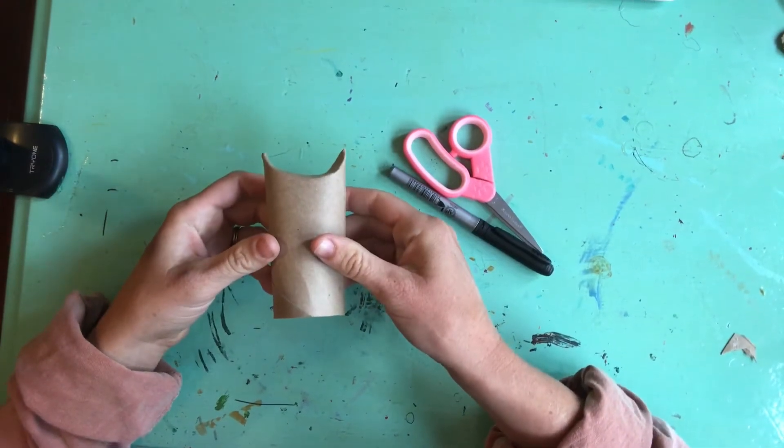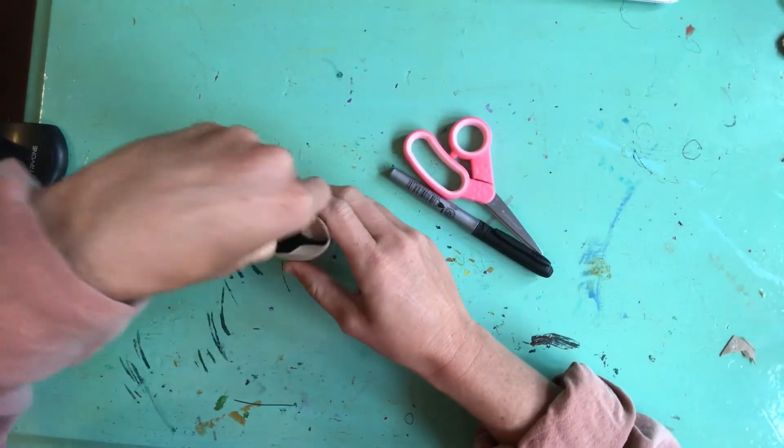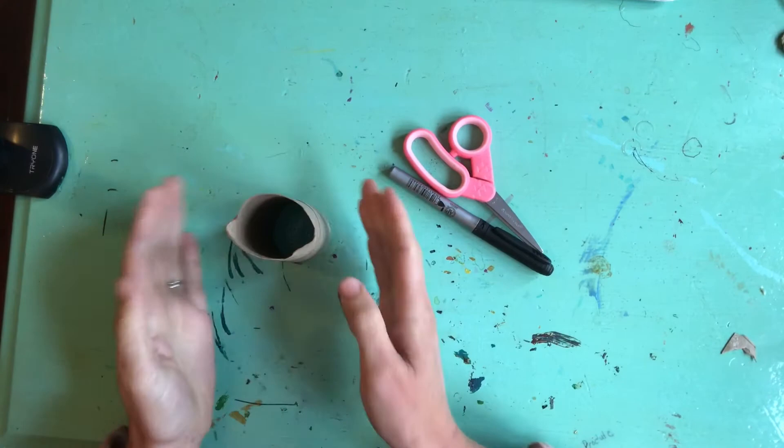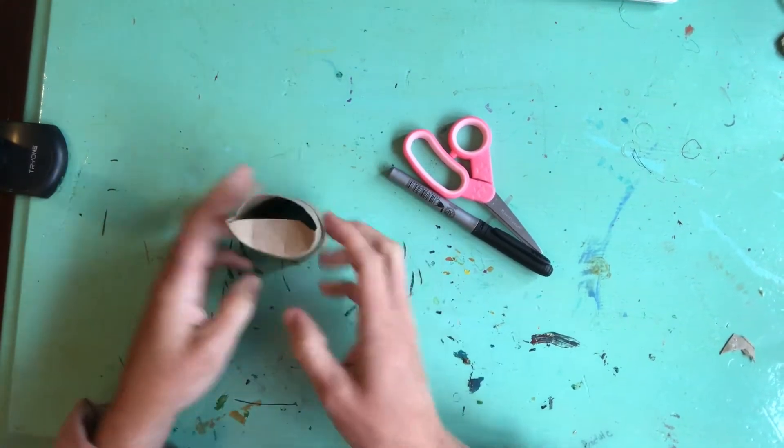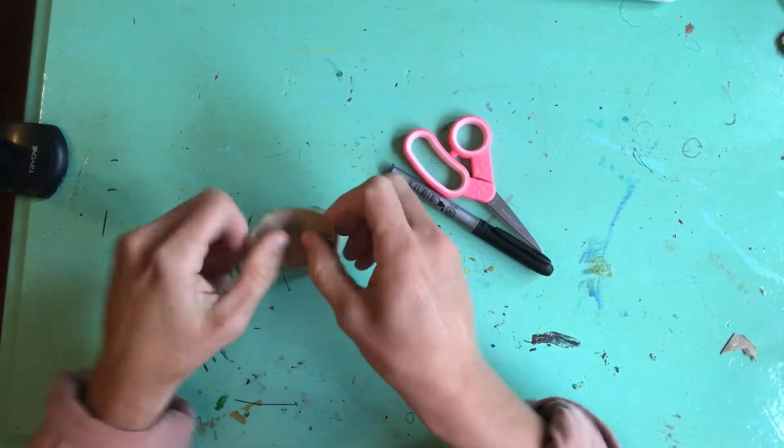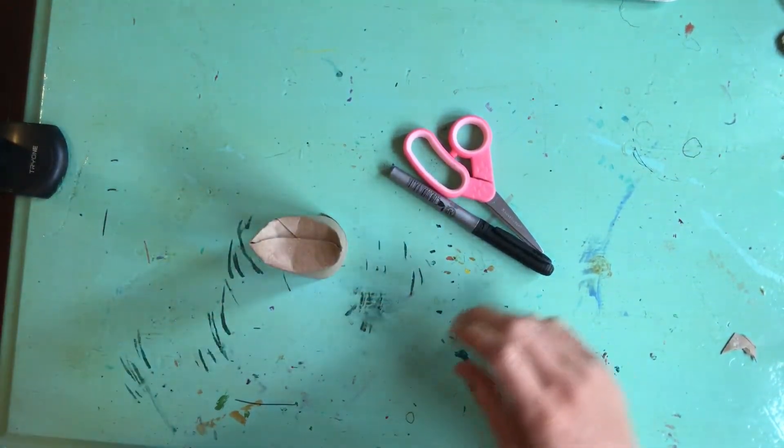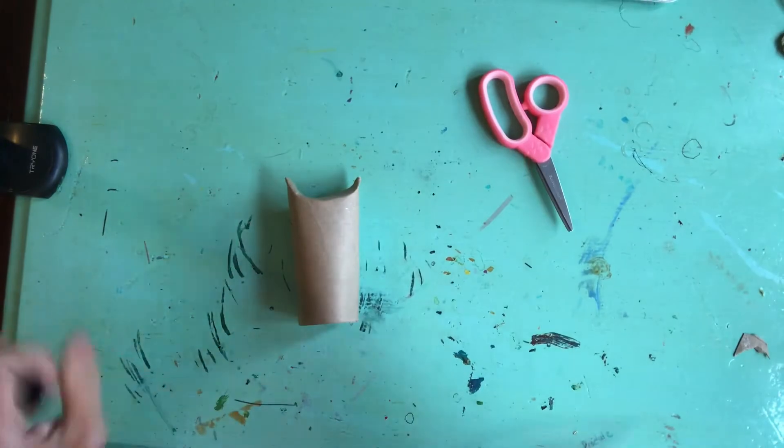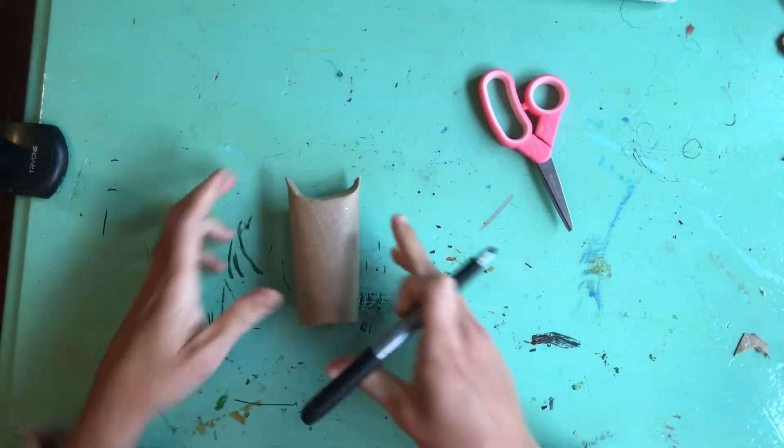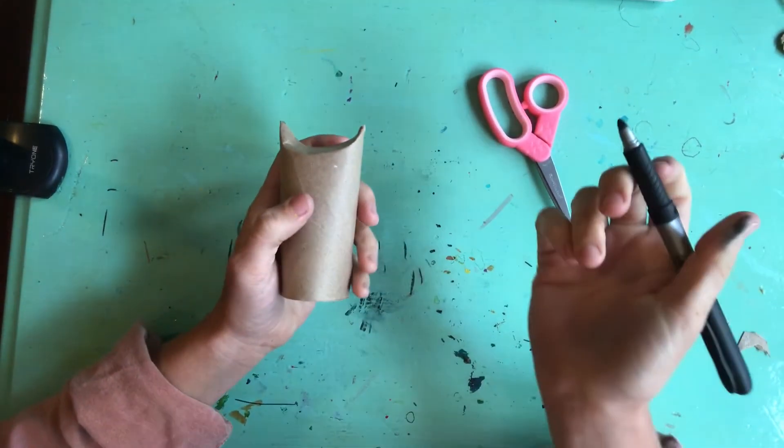So now it should look like this. I'll repeat that step in case you need it. Push it down one side, push it in. Okay, now let's start with our cat's facial features and its beautiful cute little whiskers.